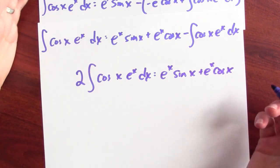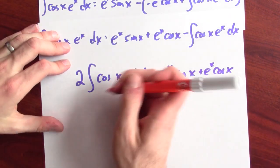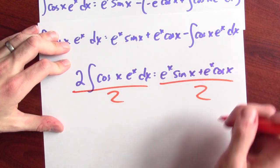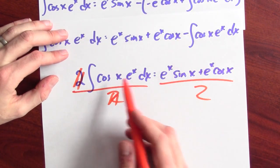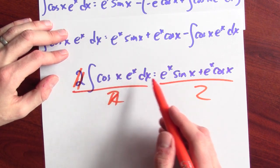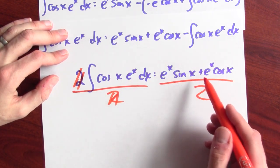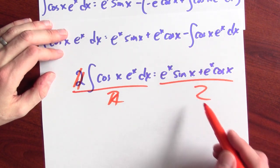And then I'll divide both sides by 2. And if I divide this side by 2 and this side by 2, well, then these 2's cancel. And I find out that an anti-derivative of cosine x e to the x is e to the x sine x plus e to the x cosine x all over 2. What we did here is one of my favorite applications of integration by parts.